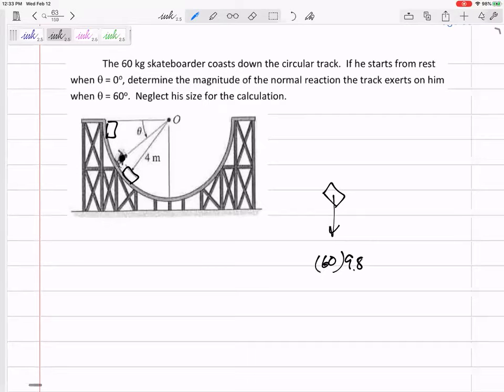So what forces are acting on here? We've got the weight, 60 times 9.81. We've got the normal force of the track pushing up on him. I'm not going to have any friction because it's not like he's skidding down here.